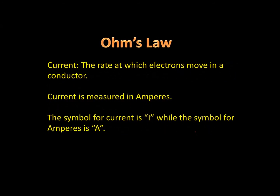Current is simply the rate at which electrons move in a conductor. It is the number of electrons that move through a circuit per second — it's coulombs per second, coulombs being a group of electrons and the time unit being the second. So it's measured in coulombs per second, or amperes.